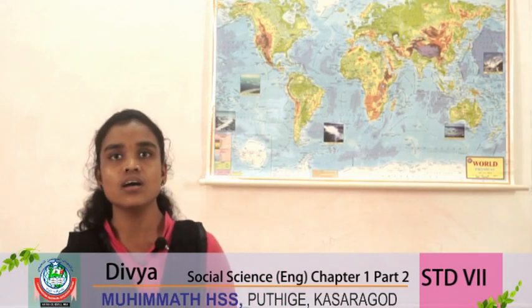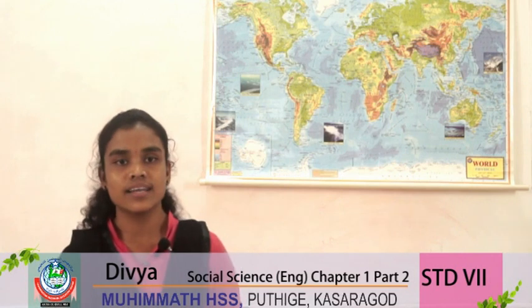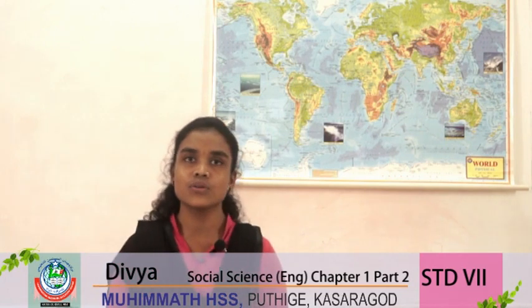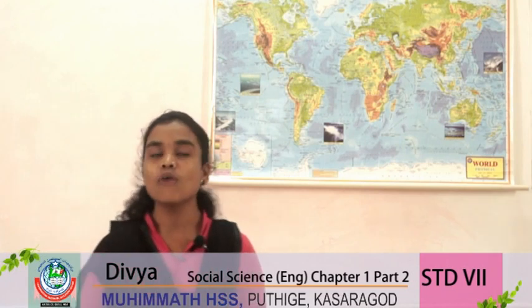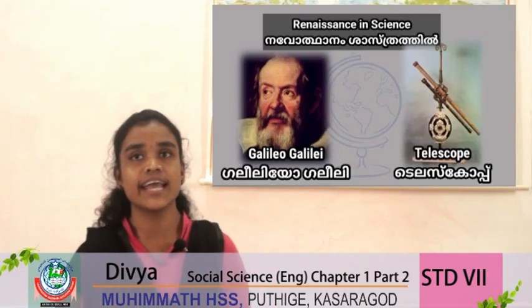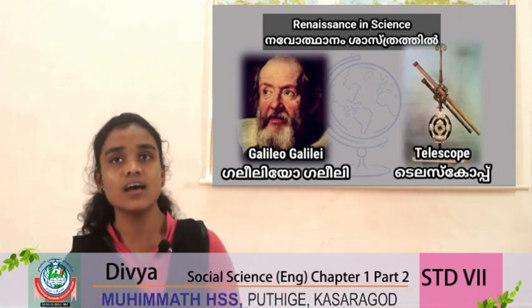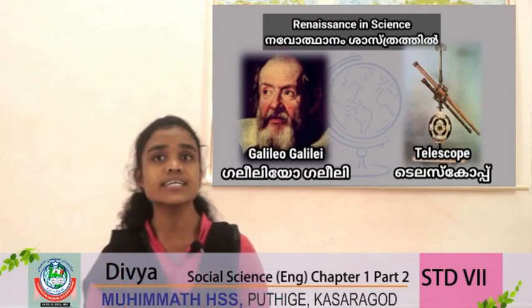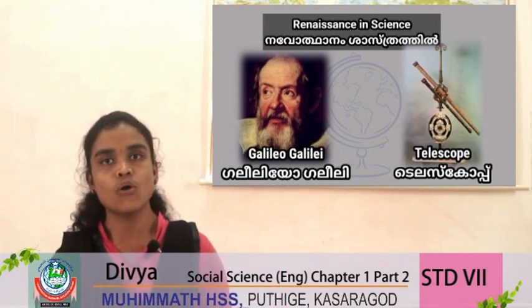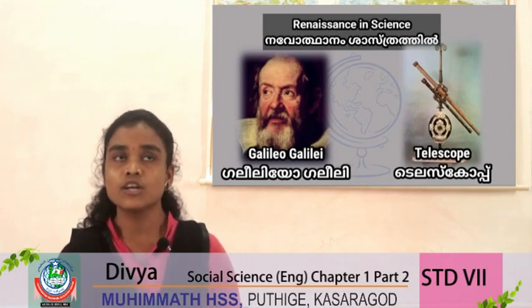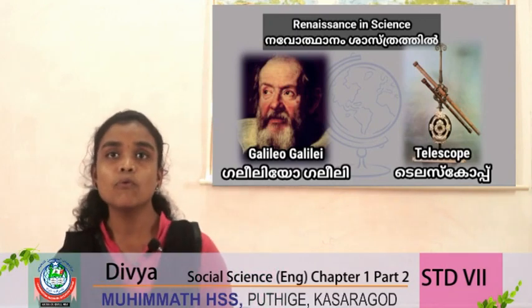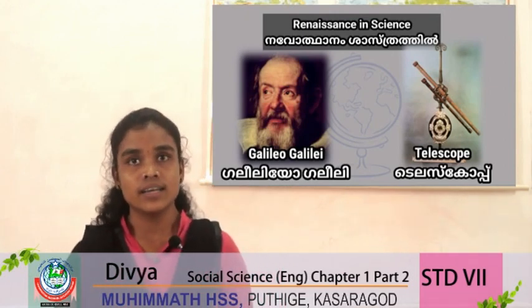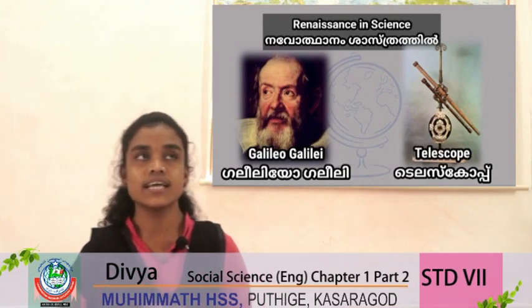That is the second major innovation that took place in the field of science during the Renaissance period. Another major change was the invention of the telescope by the famous scientist Galileo Galilei. He scientifically proven through the telescope that the sun is the center of the universe. The theory first proposed by Copernicus was proven to be a true theory by Galileo Galilei through the invention of the telescope.